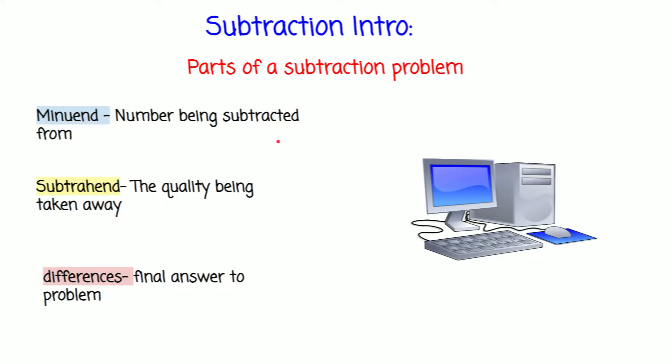Here we're going to be reviewing. You could jot this down in your computer or notebook. Don't forget the parts of a subtraction problem. The minuend is the number being subtracted from. The subtrahend is the quantity being taken away. The differences is the final answer to the problem.